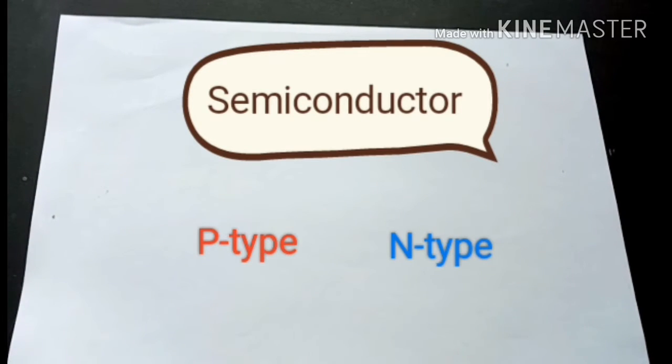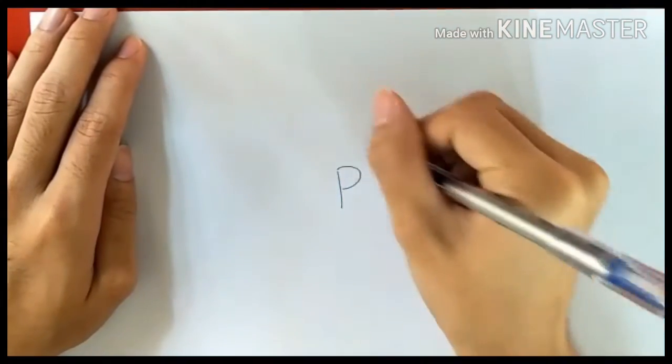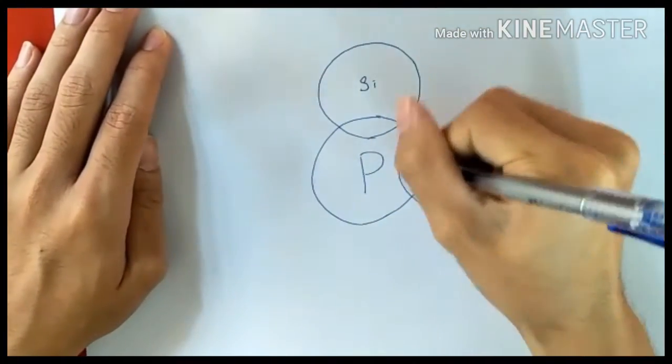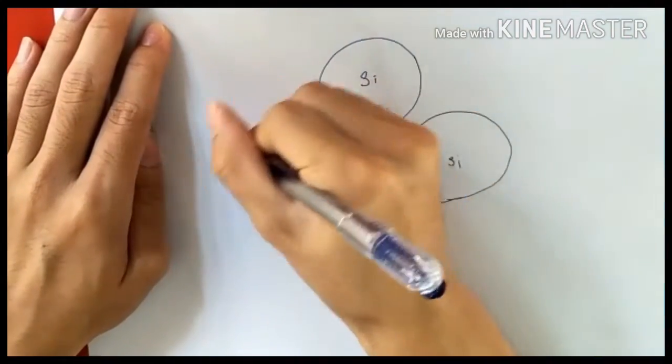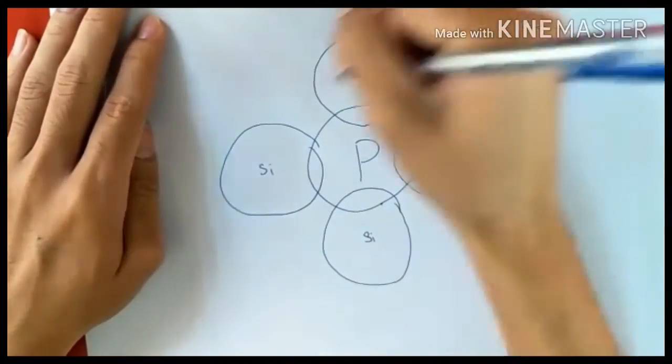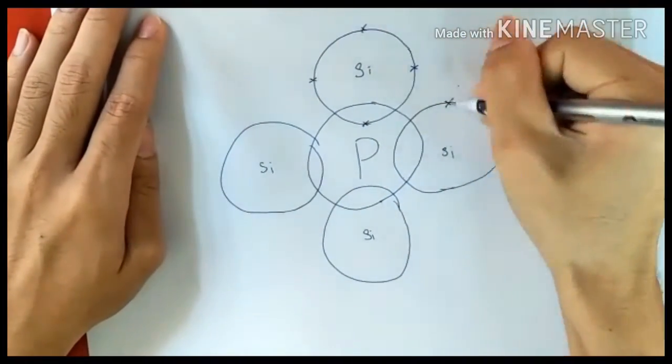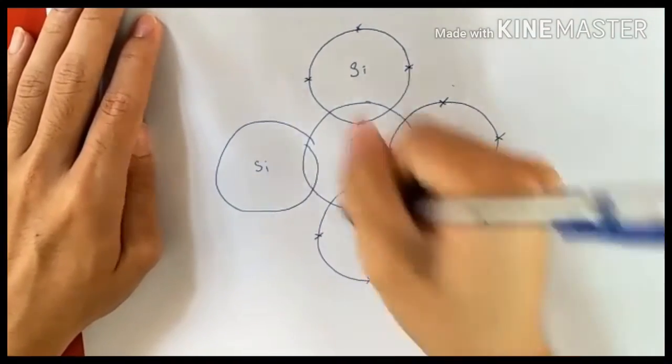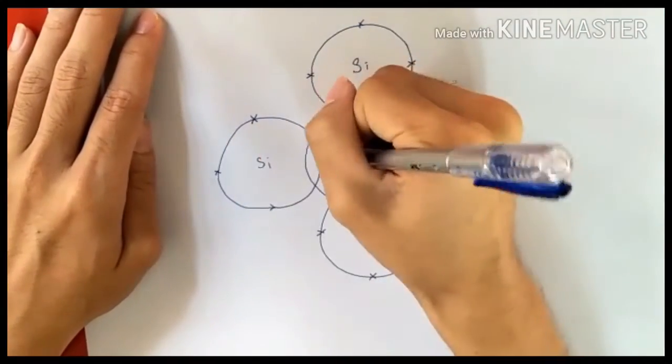As we know, pentavalent impurities consist of 5 valence electrons and form a compound with silicon, which has 4 valence electrons, that will extract one more electron from the pentavalent impurities to achieve stable configuration. And the extra electrons become free with mobility to go to another compound.